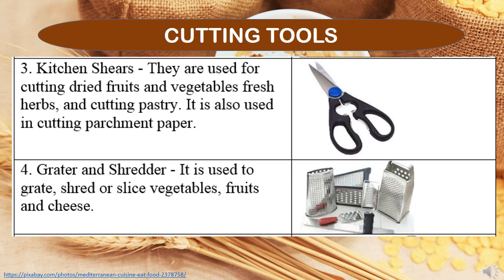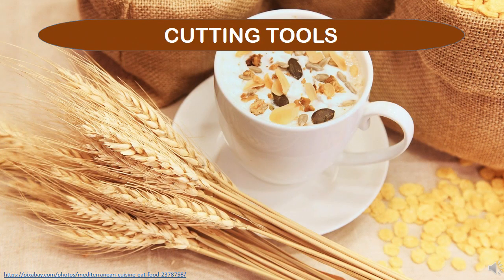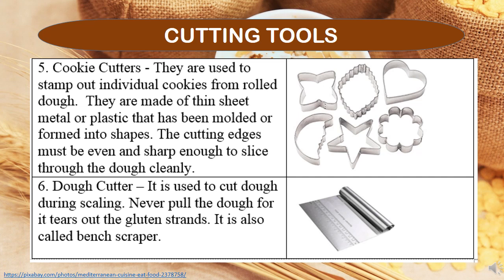The grater and shredder is used to grate, shred, or slice vegetables, fruits, and cheese. Cookie cutters are used to stamp out individual cookies from rolled dough. They are made of thin sheet metal or plastic molded into shape, and the cutting edges must be sharp enough to slice through the dough cleanly. The dough cutter is used to cut dough during scaling. Never pull the dough, as it tears the gluten strands. It is also called a bench scraper.